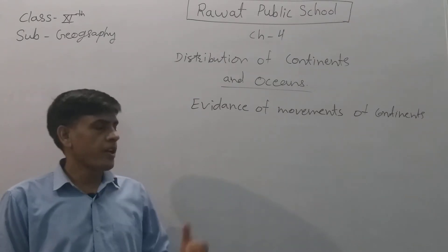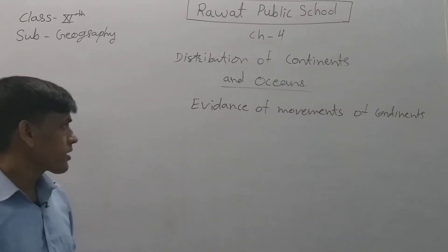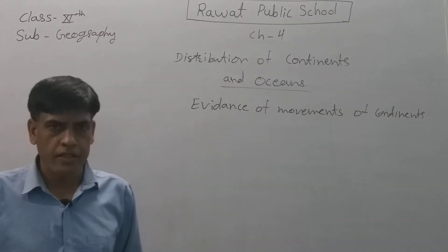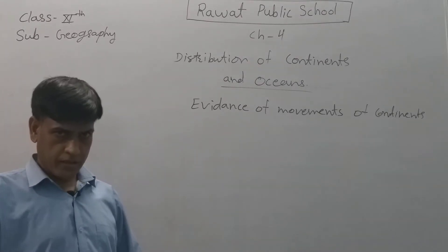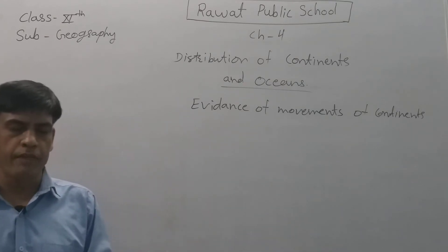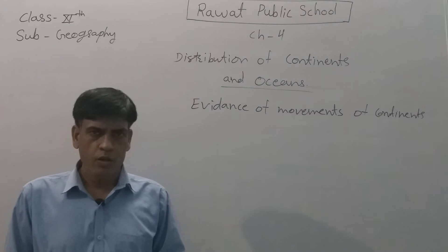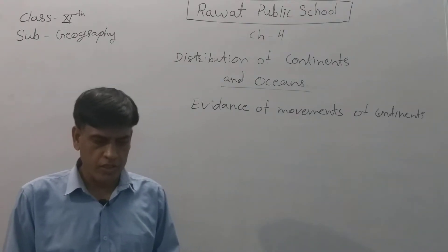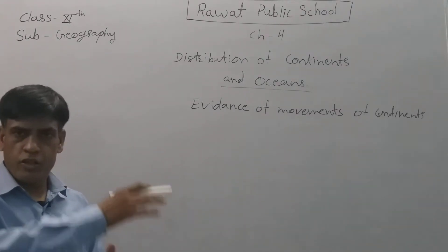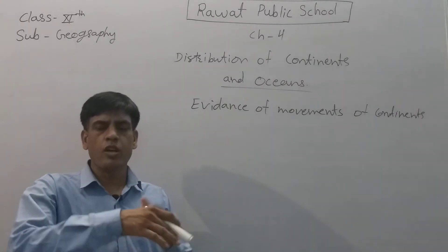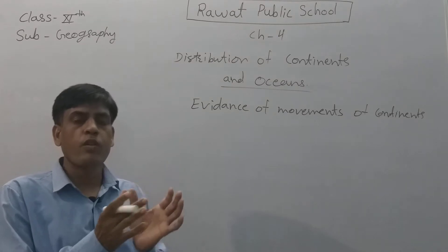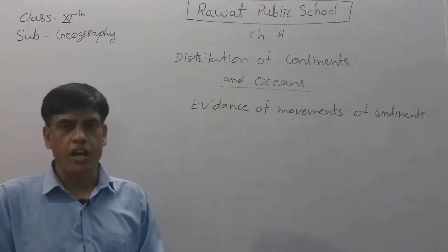In this chapter, we discussed about the evidences of movements of continents. We discussed the theory of continental drift given by Alfred Wagner, who was a French scholar. He gave the theory that there was a super continent. The ocean surrounding it is called the Panthalassa and the super continent is called the Pangea.